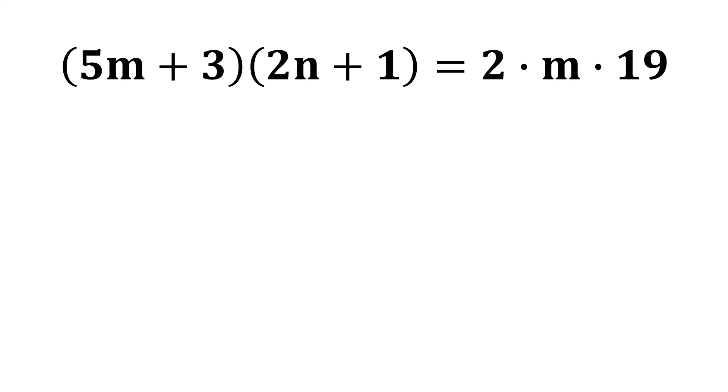Here we will use a bit of number theory. Since n is a whole number that's greater than or equal to 1, so 2n plus 1 is an odd number. Similarly, 5m plus 3 is an even number. So we can get the following combinations.